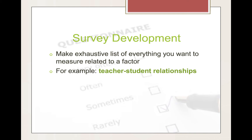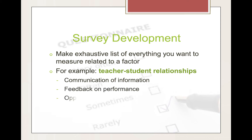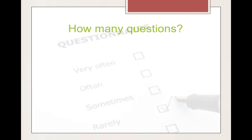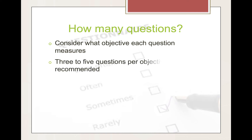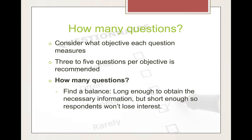You want to make an exhaustive list of everything you want to measure related to a factor. For example, in teacher-student relationships, you might look at communication of information, feedback on performance, opportunities for input, care and concern, etc. Make a long list and then shorten it to the ones you want for your particular survey. Three to five questions per objective is recommended. Find a balance — long enough to obtain the necessary information, but short enough so respondents won't lose interest. The goal is about 15 to 30 minutes max. If you have too many, people will get frustrated and quit and you'll lose your data.